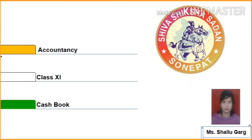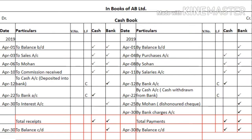Hello everyone. Today in this module you will be learning about how to prepare a double column cash book. Let's get started. This is the format of the double column cash book. On the debit side there will be a total of six columns.